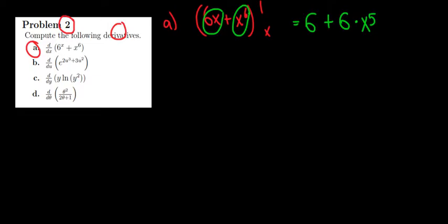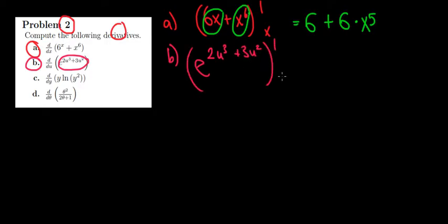Now, let's keep going because these are pretty short. So in part B, what do we have over here? The derivative of this expression with respect to u. So we have e to the power of 2u cubed plus 3u squared derivative with respect to u. Again, u is going to be our variable.